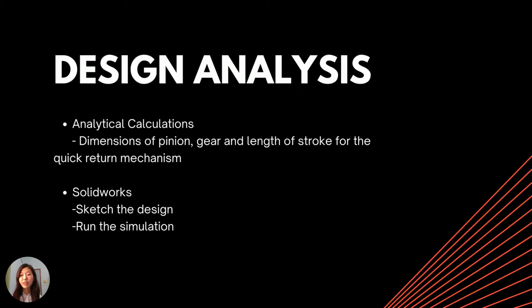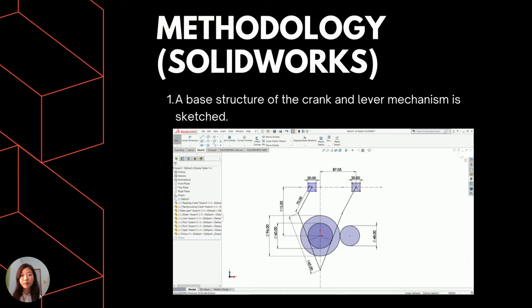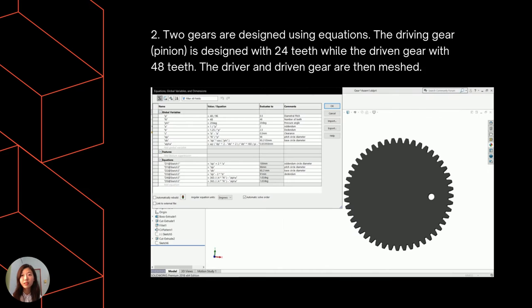It is incredibly important to sketch the design in SolidWorks as it helps to simulate the mechanism. This allows us to ensure the mechanism is able to function properly and also saves a lot of time in production as the exact length of material is known. With the help of simulation, we are able to prevent wastage of material and identify dimensions accurately. In SolidWorks, a base structure of the crank lever mechanism is first sketched, and then two gears are designed using equations we have learned.